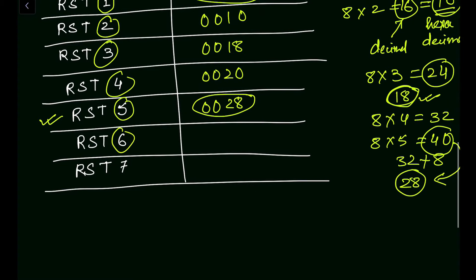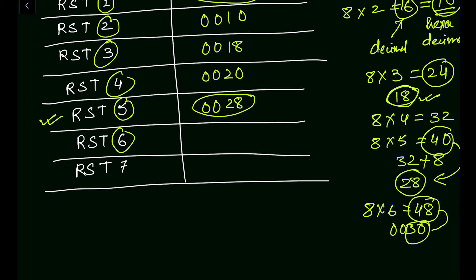For RST6, 8 multiplied by 6 equals 48 decimal, which is 30H in hexadecimal, so the restart location is 0030H. For RST7, 8 multiplied by 7 equals 56 decimal, which is 38H in hexadecimal, so the restart location is 0038H. This completes all eight restart instruction addresses.